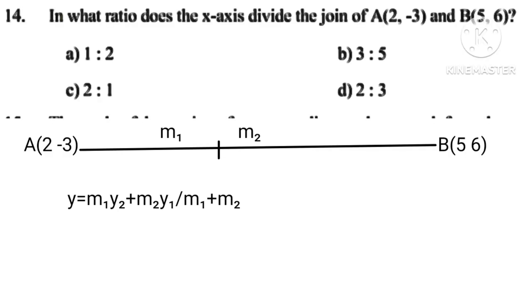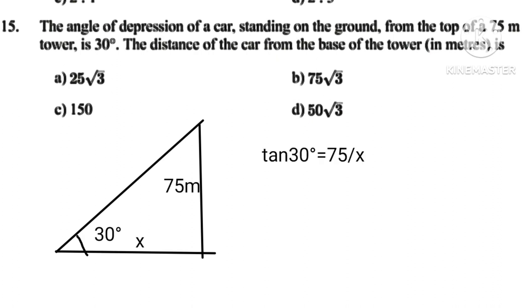Using the formula, we get by putting Y equals 0. Tan 30 degrees equals 75 upon X. Implies that 1 over square root 3 equals 75 upon X. X equals 75 square root 3 centimeters.